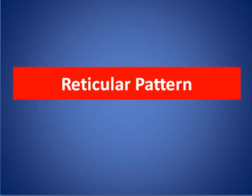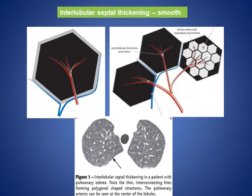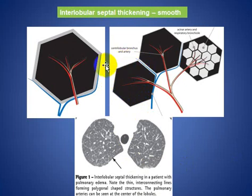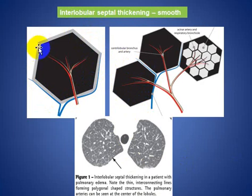Here I will discuss in this mini talk about the reticular pattern involving the secondary pulmonary lobule. As we see here, this is the normal septum, and here you see there is some thickening of the normal septum, and you can see the thickening is smooth.